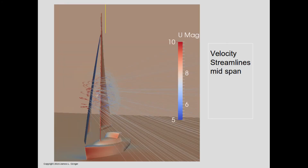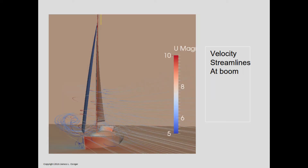Here's a view from upwind showing streamlines about a third of the way up the sail. In this region the streamlines are relatively parallel to the water with well-behaved airflow around both sails. Things get much more interesting near the base of the sails, where there's a gap: air attempts to move from high to low pressure, so some air bypasses the sails entirely and flows through the gap, resulting in a vortex which extends a long way downwind from the sailboat. You can also see some turbulence caused by the hull itself.